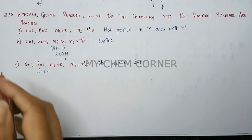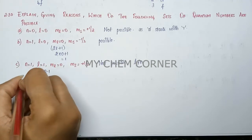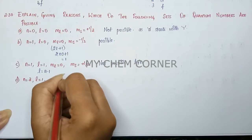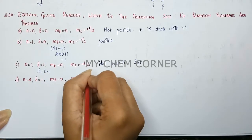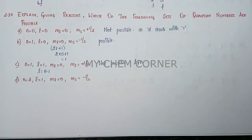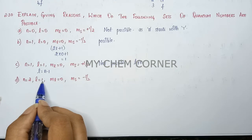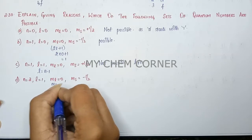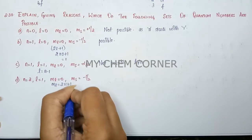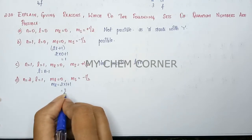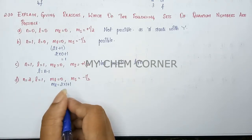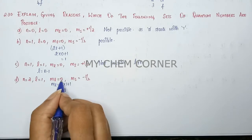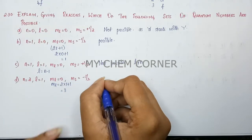The fourth question: n is equal to two, l is equal to one, ml is equal to zero, and ms is equal to minus half. Here n is two, and l equals n minus one which is one — that's valid. The number of ml values is 2l+1 = 2(1)+1 = 3, so ml can be -1, 0, or +1. Zero is one of those values, so this is a possible orbital.